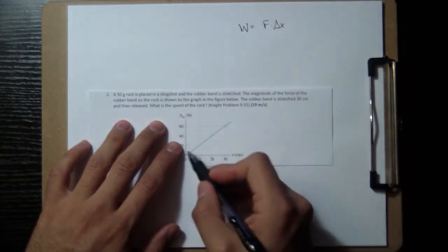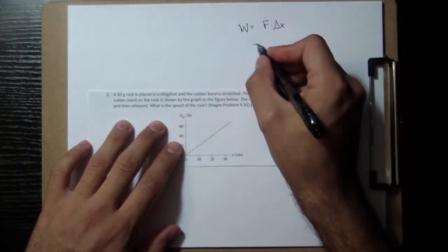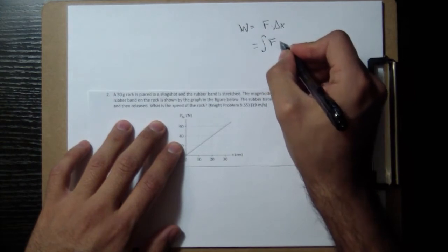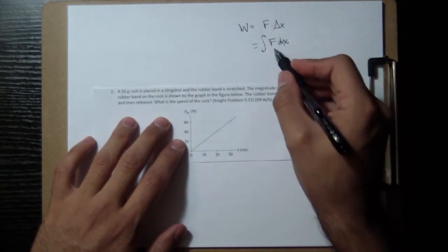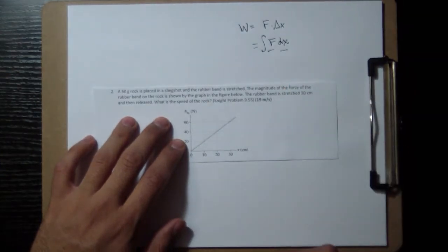If the force is constant, but the force is changing like in this one, then this becomes an integral F dx, which is going to be the area under the curve of the F versus x graph.